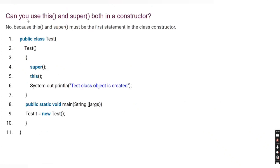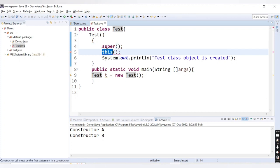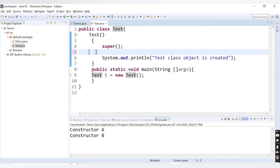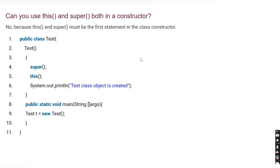The last question: can you use both this and super in a constructor? The answer is no, because both super and this must be the first statement in the constructor. If you use both, one of them will necessarily be the second statement and the compiler will throw an error: 'constructor call must be the first statement in a constructor'. If you remove one of them, the code will compile and run successfully. That was all about the super and this keywords.